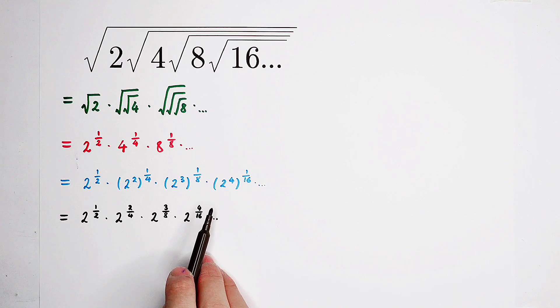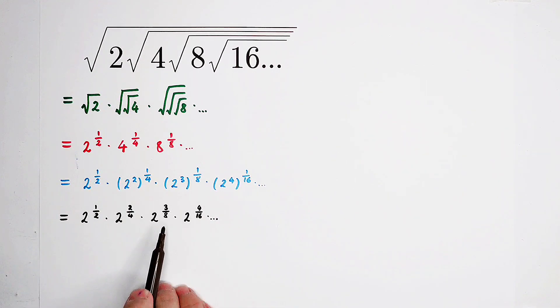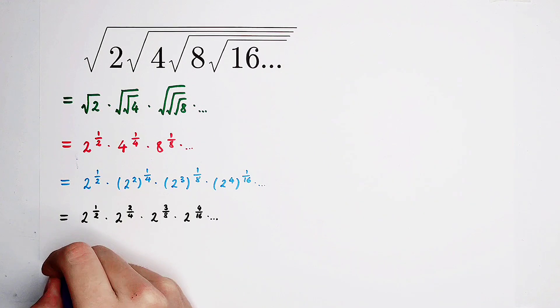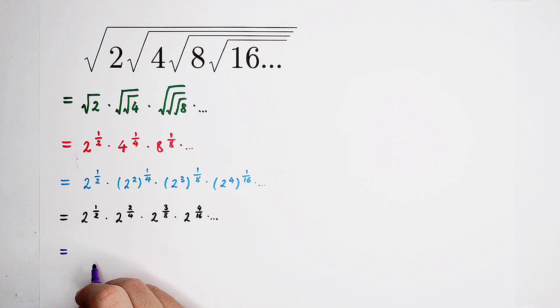So now you can see that the numerators of the exponents are 1, 2, 3, 4. The denominators are 2, 4, 8, 16. The numerators are algebraic sequence, and the denominators are geometric sequence.